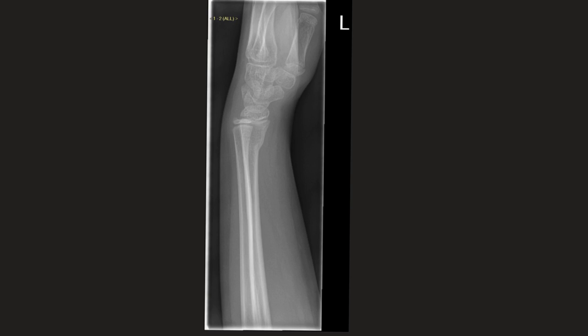Looking closely at this other lateral wrist x-ray, a similar appearance is seen on the anterior cortex of the radius, just here — and here is where the buccal fracture is.